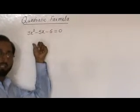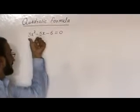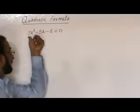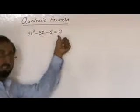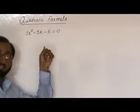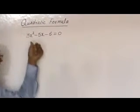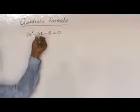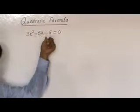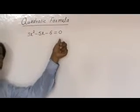We have to find the solution set of the quadratic equation 3x² - 5x - 6 = 0.